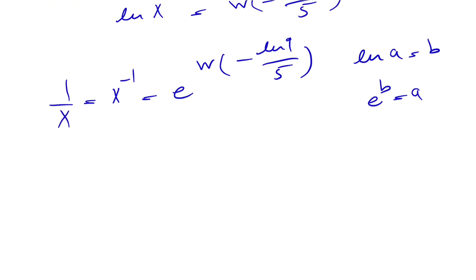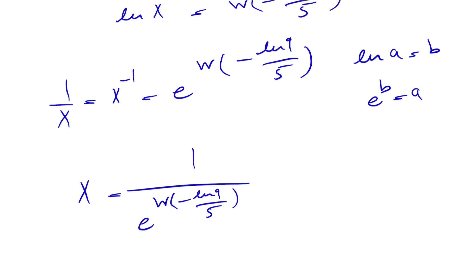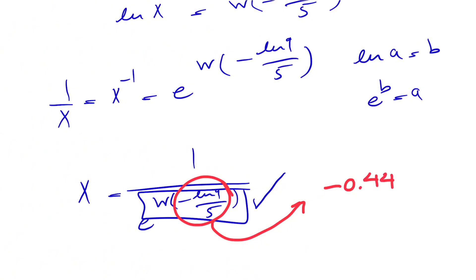We know x^(-1) is 1/x, so to find x we flip the numerator and denominator on each side, giving x = 1/e^(W(-ln(9)/5)). Now, if we calculate the value of -ln(9)/5, that gives approximately -0.44, which is not in the domain of the Lambert W function for real numbers. We could pursue complex answers, but that's not what we're looking for here. There is a website — Wolfram Alpha — that can calculate the Lambert W function, and I'll put the link in the description. But since -0.44 is outside the real domain of the Lambert W function, there are no real answers for this equation.